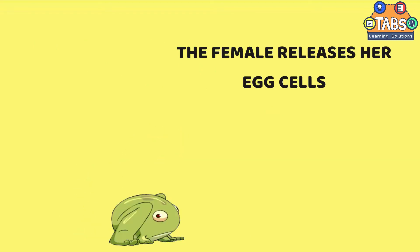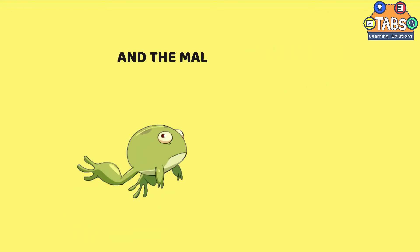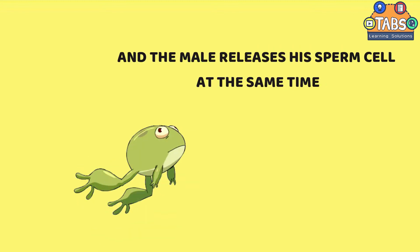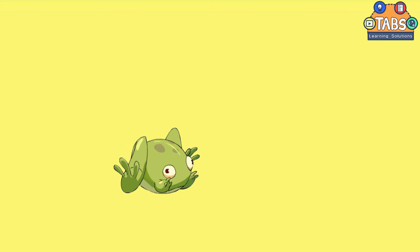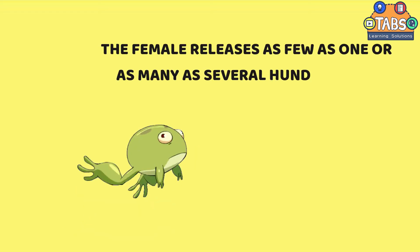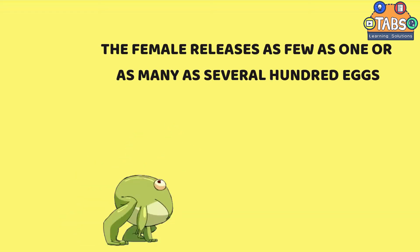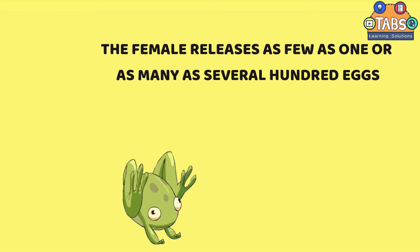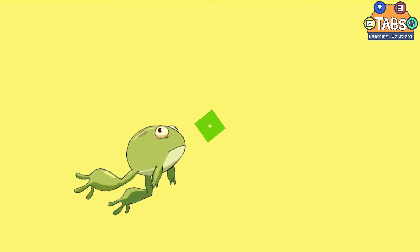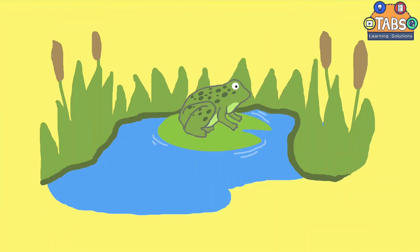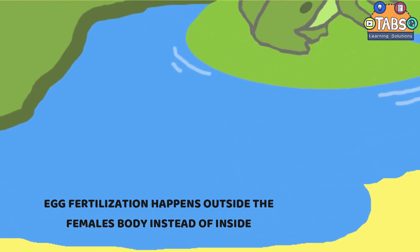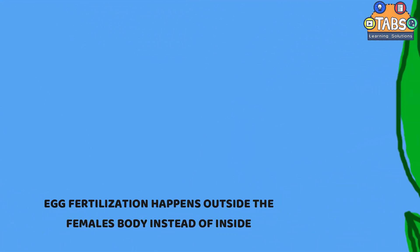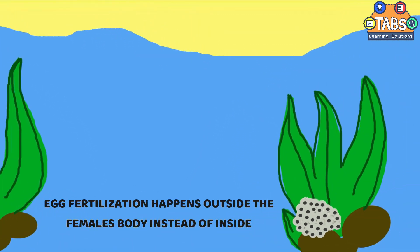The female releases her egg cells and the male releases his sperm cell at the same time. The female releases as few as one or as many as several hundred eggs. All frogs reproduce sexually. Egg fertilization happens outside the female's body instead of inside.